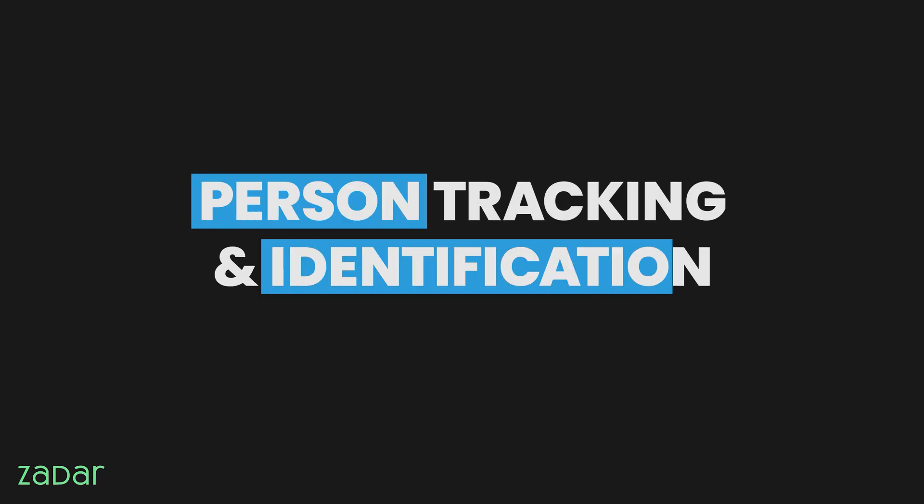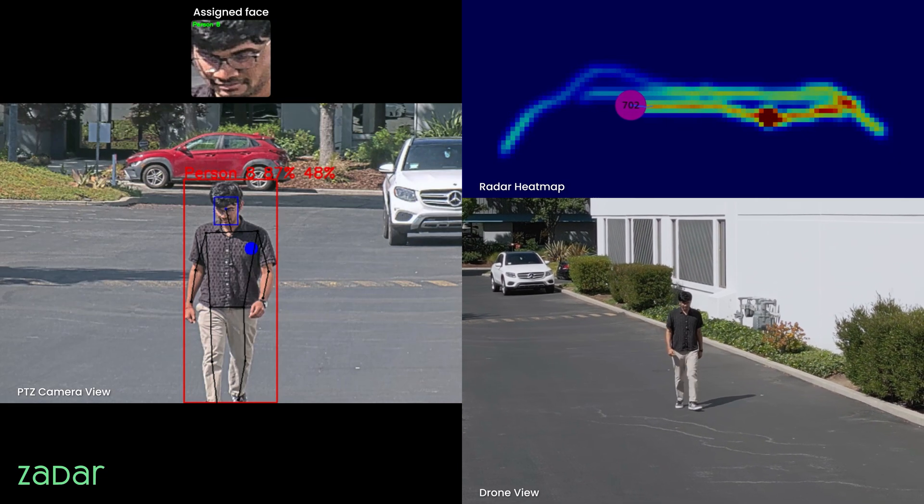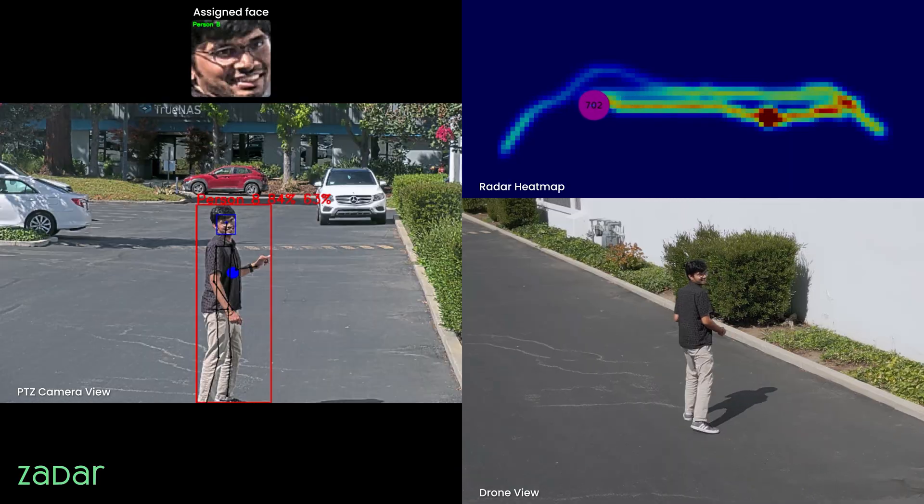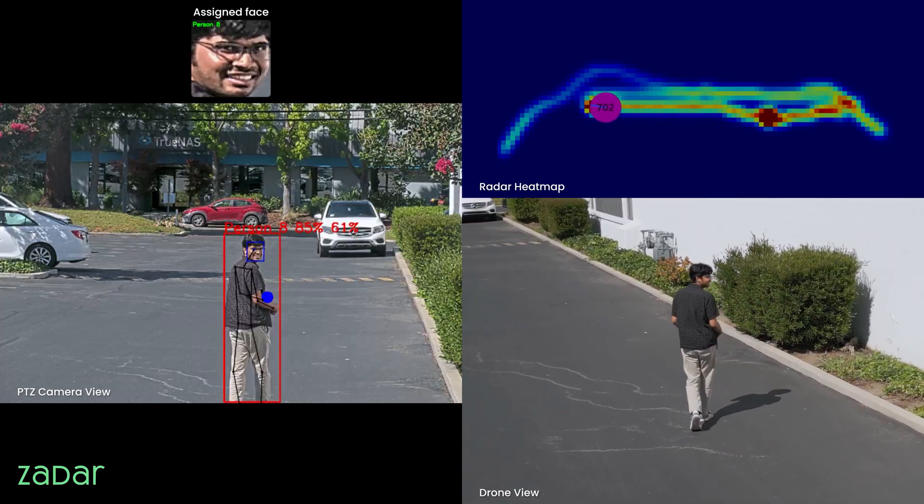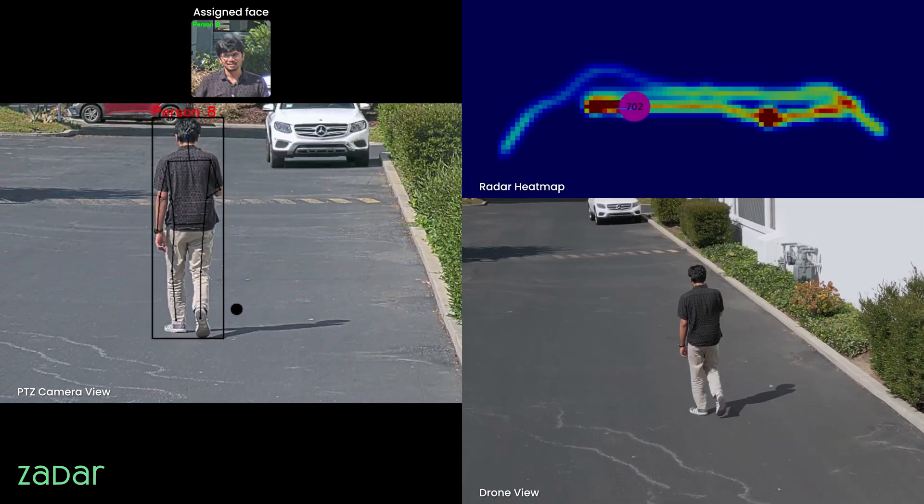Person tracking and identification. On PTZ camera view, the blue dots are the 3D radar tracks, and the red boxes are the object boundaries, and through pink circles being visualized on the radar heat map.